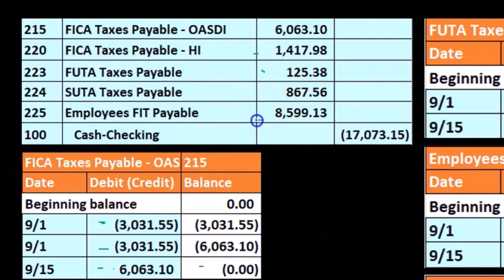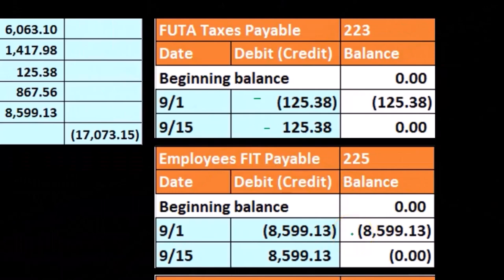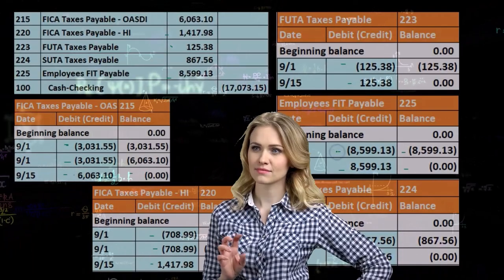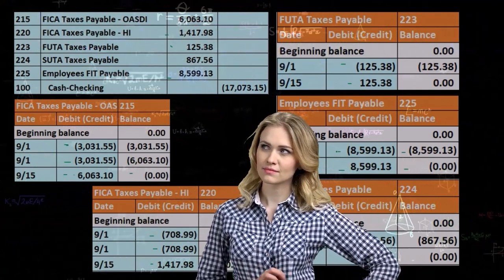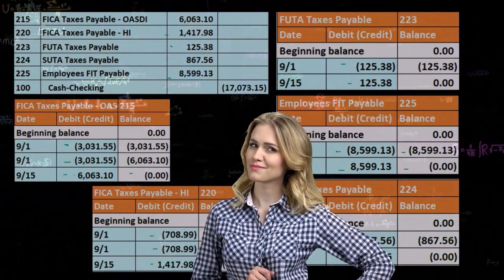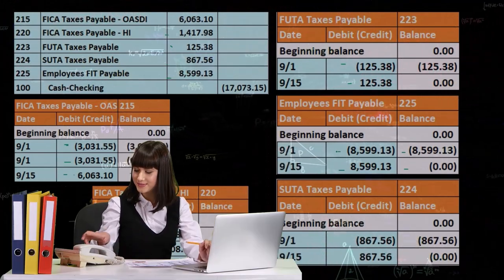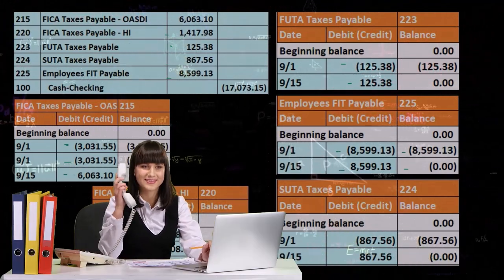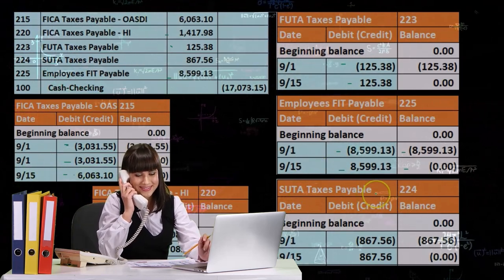For FIT (Federal Income Tax), it was at $8,055.99. We paid it and it goes down to zero. Note again there's only one entry here, and the reason is that it's an employee portion — this is not an employer tax. It only comes out of the employee paycheck, so this is an employee tax that we paid off. No matching here.